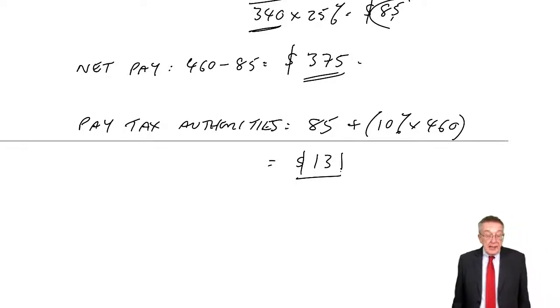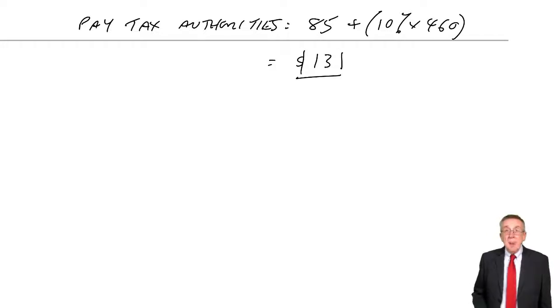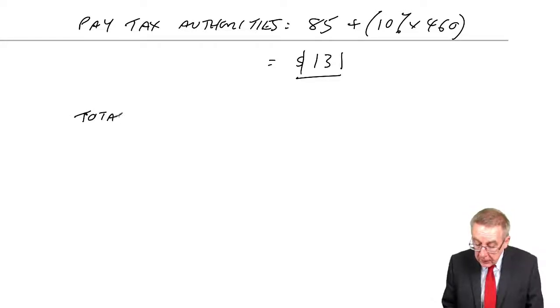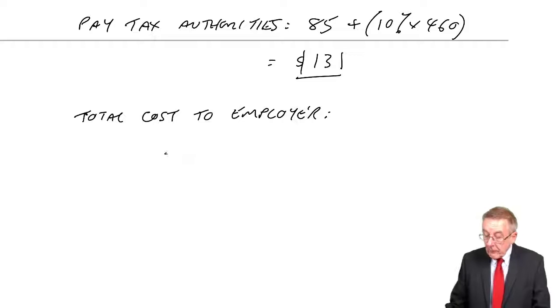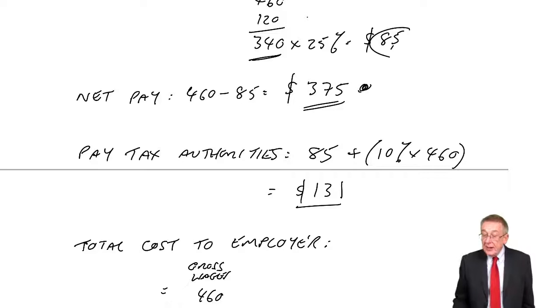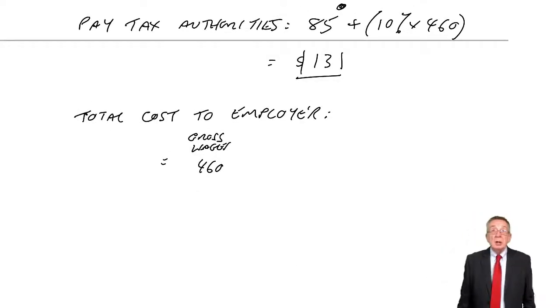There's one other thing which isn't asked for in the example, but could have been, is how much is it costing the employer to employ this person? The total cost to the employer. Well, first of all, the gross wages were $460. All right, we only actually paid the employee $375. But in addition, we have to pay $85 to the state, which have been taken off the employee. And so the two together, of course, is the $460. So it's costing the employer $460 to employ this person.